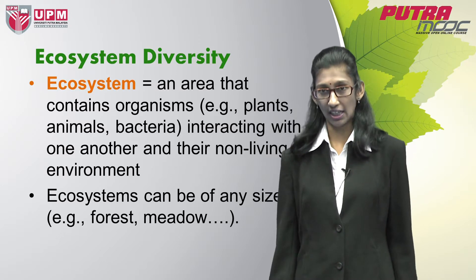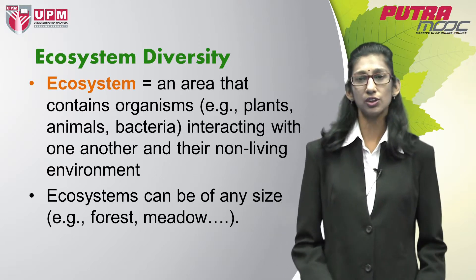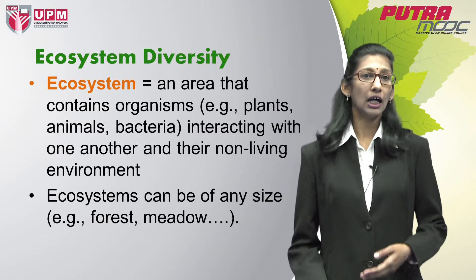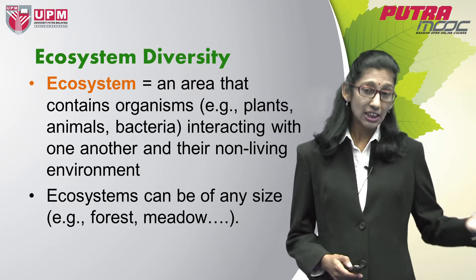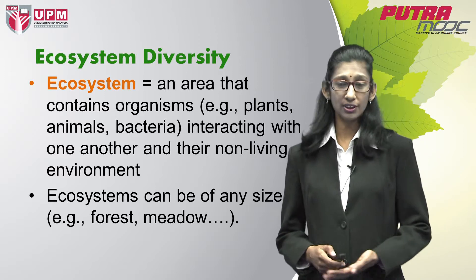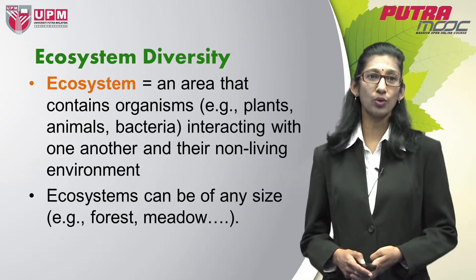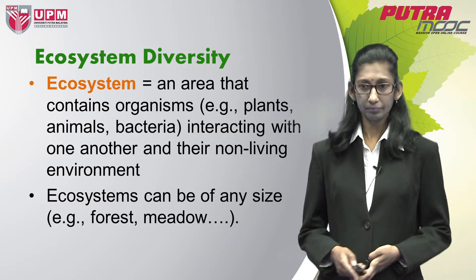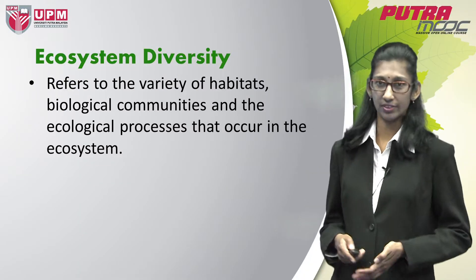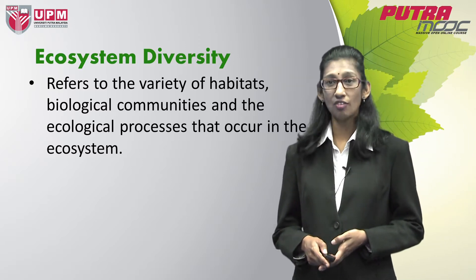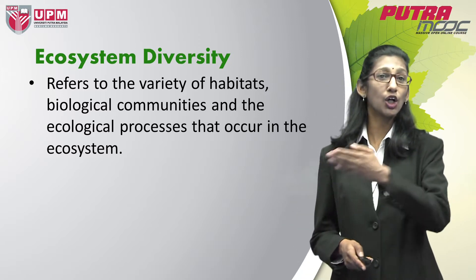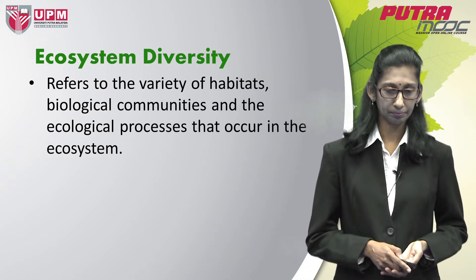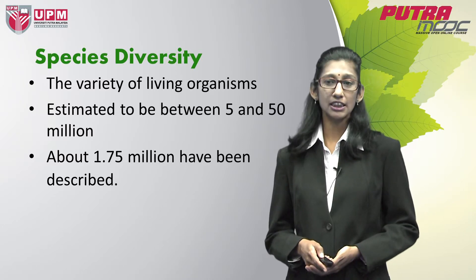Ecosystems can be of any size — small or big — and examples include a mangrove ecosystem, a forest ecosystem, an ocean ecosystem, and a desert ecosystem. Obviously, a mangrove and a forest ecosystem would have larger diversity compared to a desert ecosystem. Ecosystem diversity refers to the variety of habitats, biological communities, and the ecological processes that occur within an ecosystem.